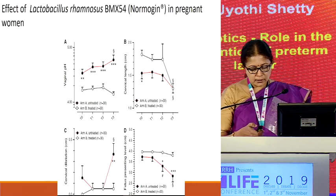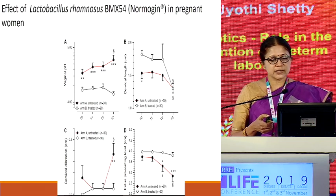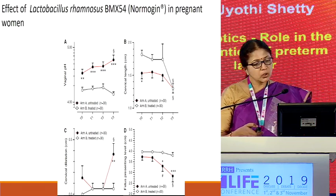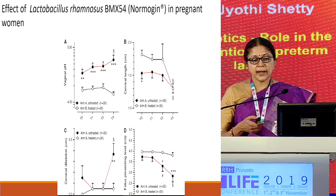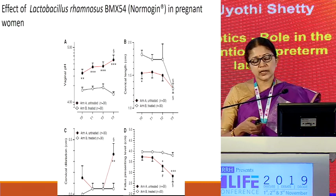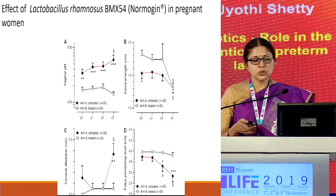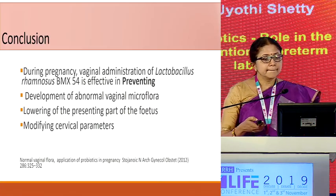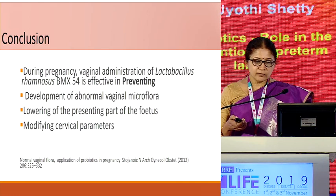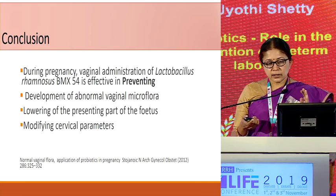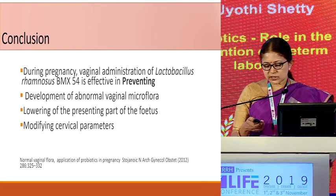In that study, they assessed vaginal pH, cervical length, cervical dilatation, and fetal head descent. Results showed clearly that the cervix remained long, did not dilate, and the fetal head did not descend — since engagement of the fetal head is typically a sign of preterm labor. The conclusion was that vaginal Lactobacillus was effective: it prevented abnormal vaginal flora, prevented engagement of the fetal head, kept the cervix long, and prevented cervical effacement.